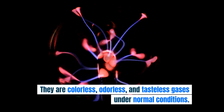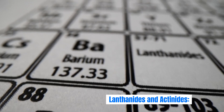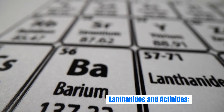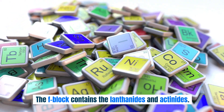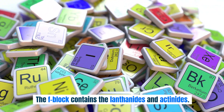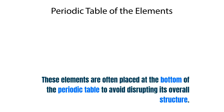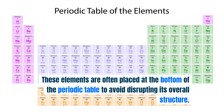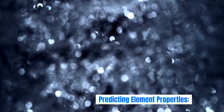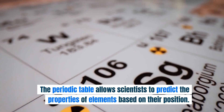Lanthanides and actinides: the f-block contains the lanthanides and actinides. These elements are often placed at the bottom of the periodic table to avoid disrupting its overall structure.